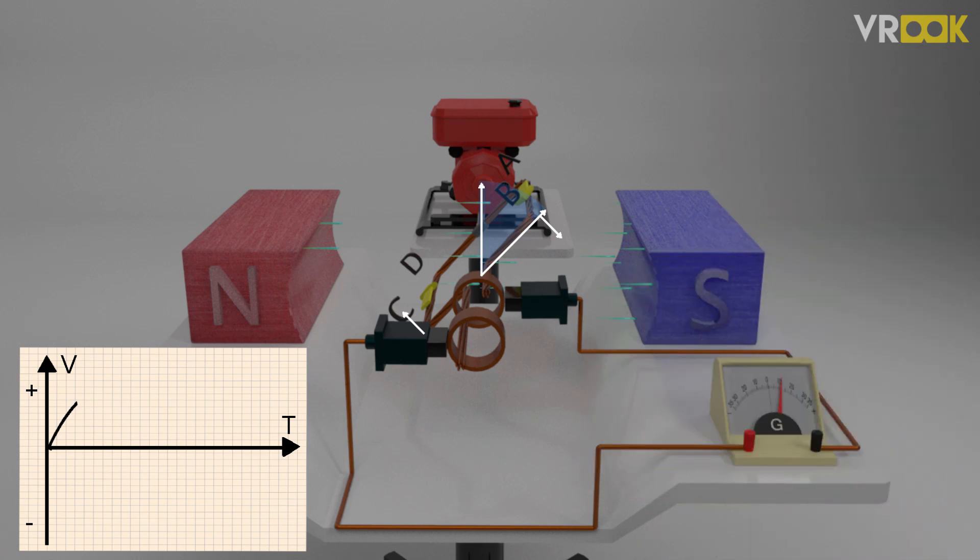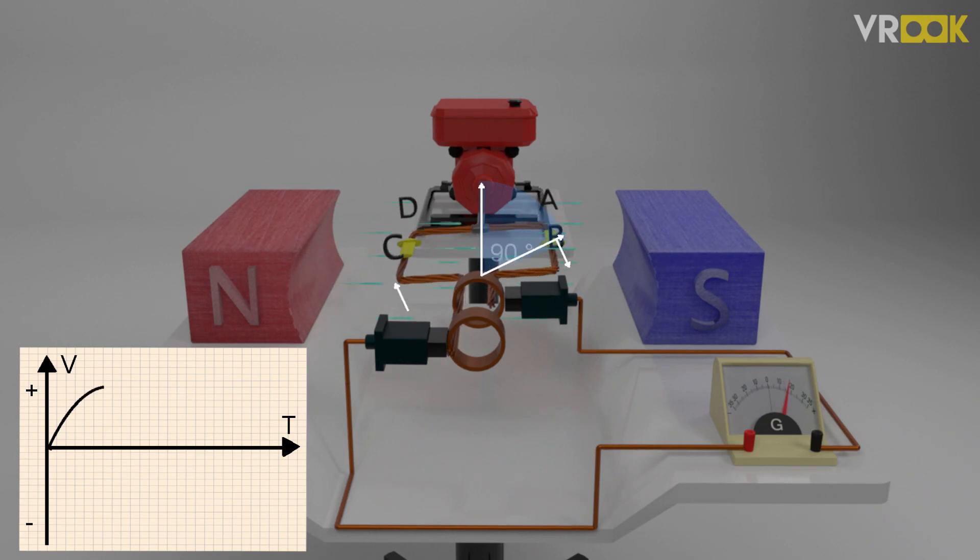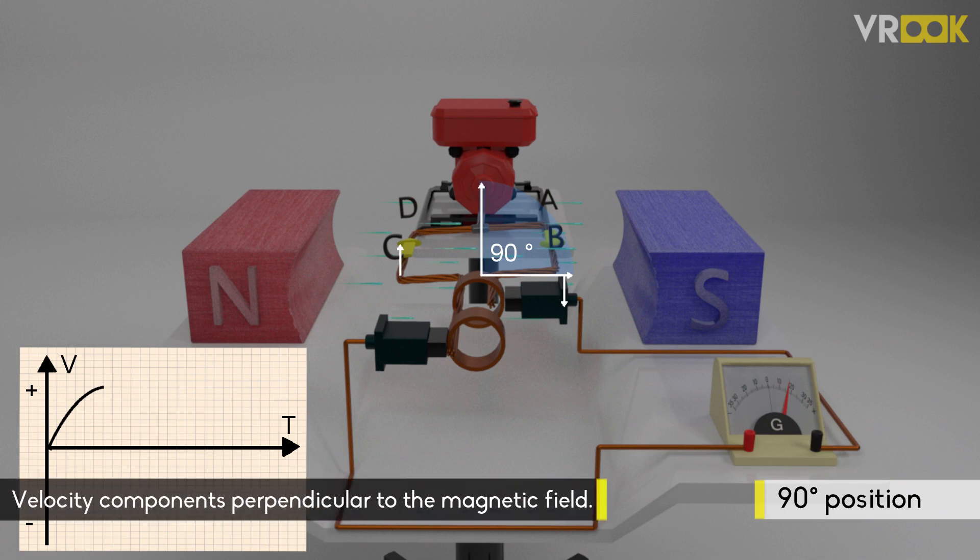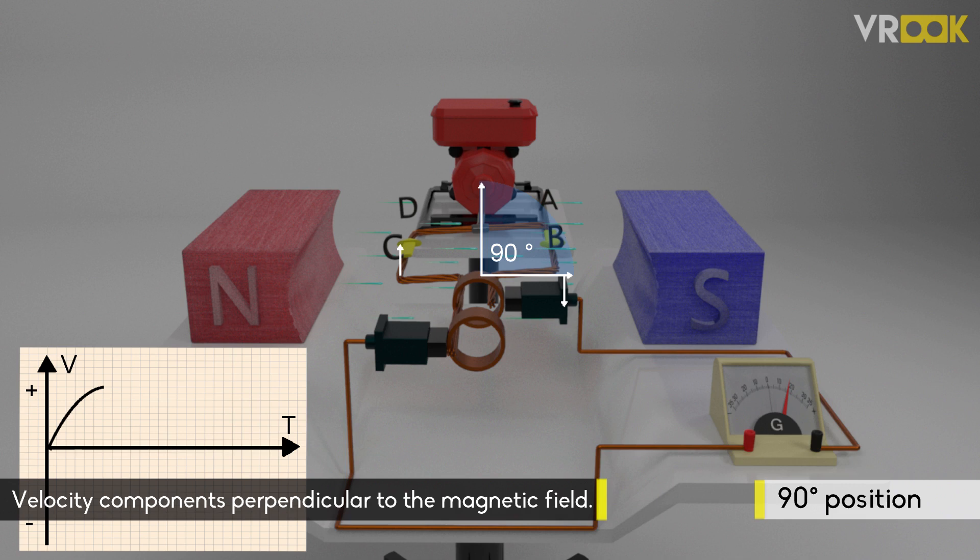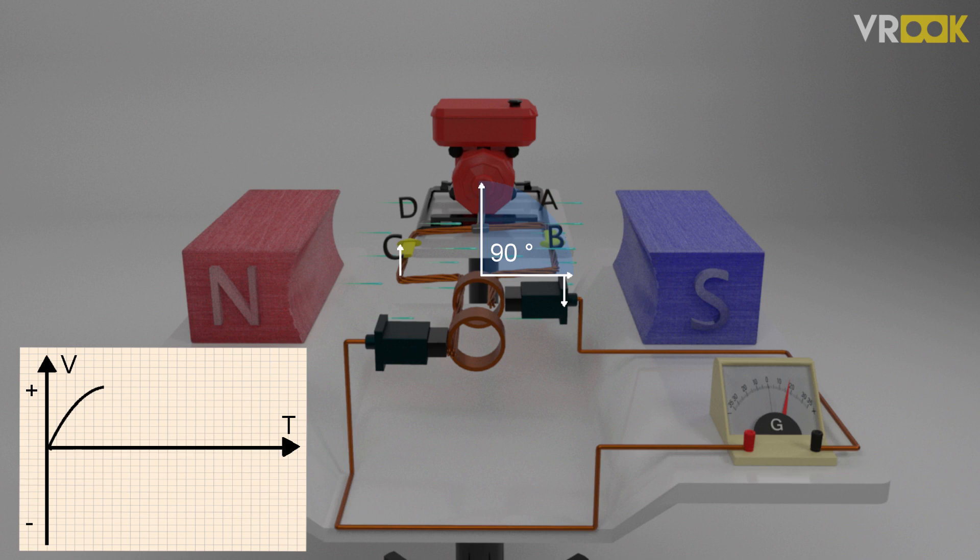Now, if we move still ahead and reach the 90 degree position, the velocity components of conductor AB and CD will be perpendicular to the magnetic field. Hence, there will be maximum linking of flux and we get maximum EMF. We can see this in the graph where the current reaches the positive peak value.